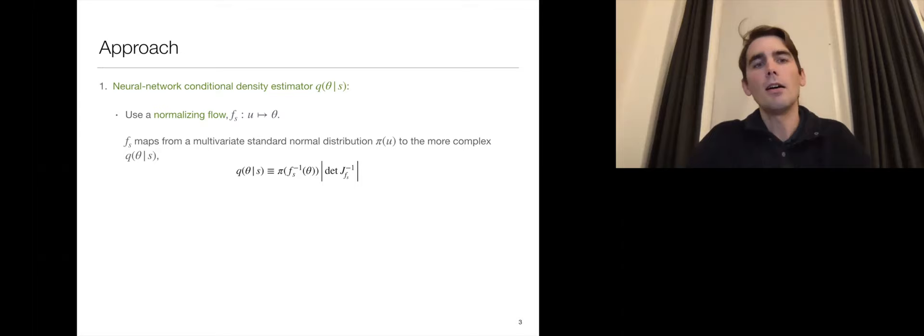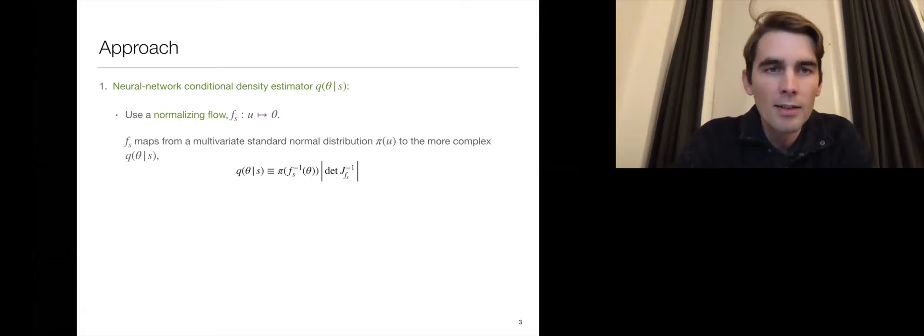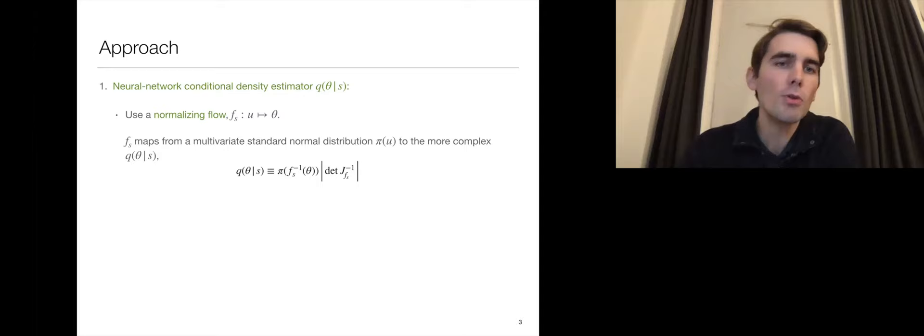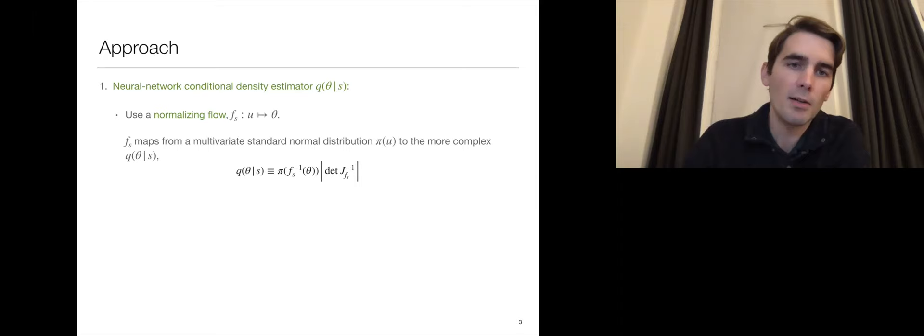What this is, is a mapping that depends on the strain data that takes you from a simple distribution, in our case a normal distribution, into the more complex distribution. We represent this function using a neural network. What it allows us to do is we can draw samples from the standard normal distribution, which is easy, and then we can quickly apply that map to get samples from the more complex distribution. Using this neural network and the particular normalizing flow that we're using, called the neural spline flow, it means that we can represent quite complicated distributions Q, and also have a complicated dependence on the strain data.